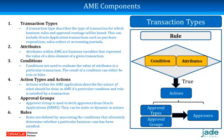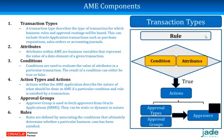Conditions are used to evaluate the value of attributes in a transaction. The result of a condition is either true or false, and conditions generally represent the 'if' part of a statement. Action types and actions are the next component — an action represents one part of an approval rule and provides instruction to AME when a condition is satisfied. It also determines approvers and the number of approvers. Action types are basically groups of actions.